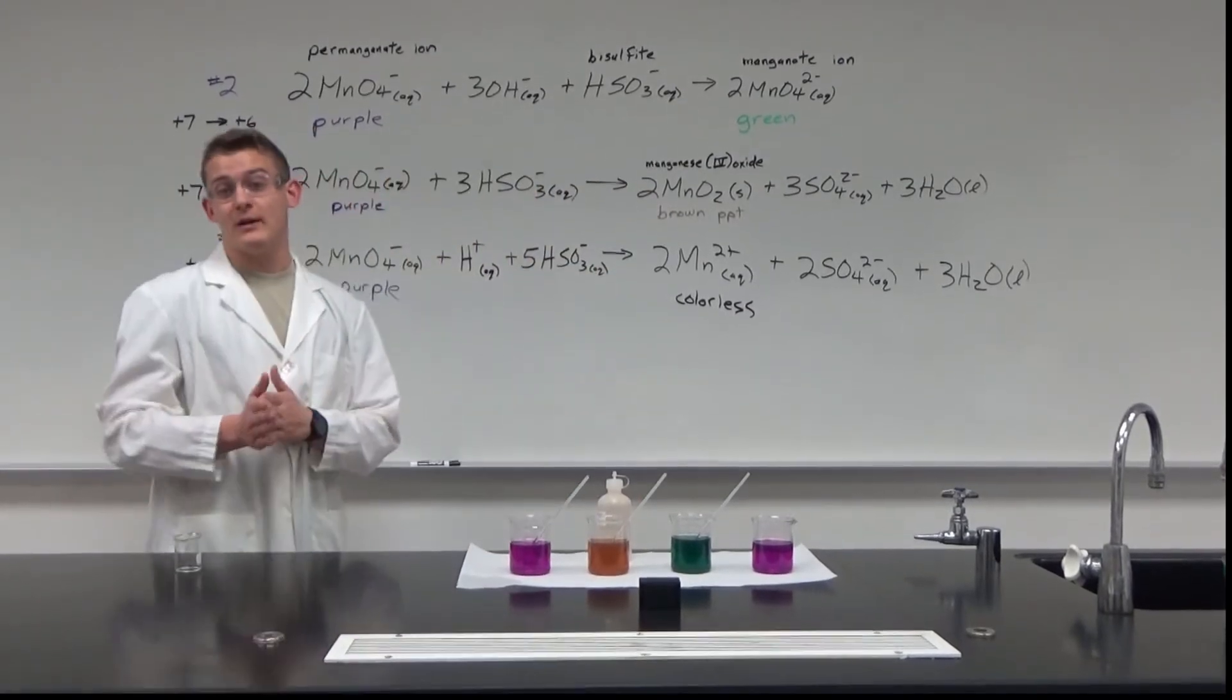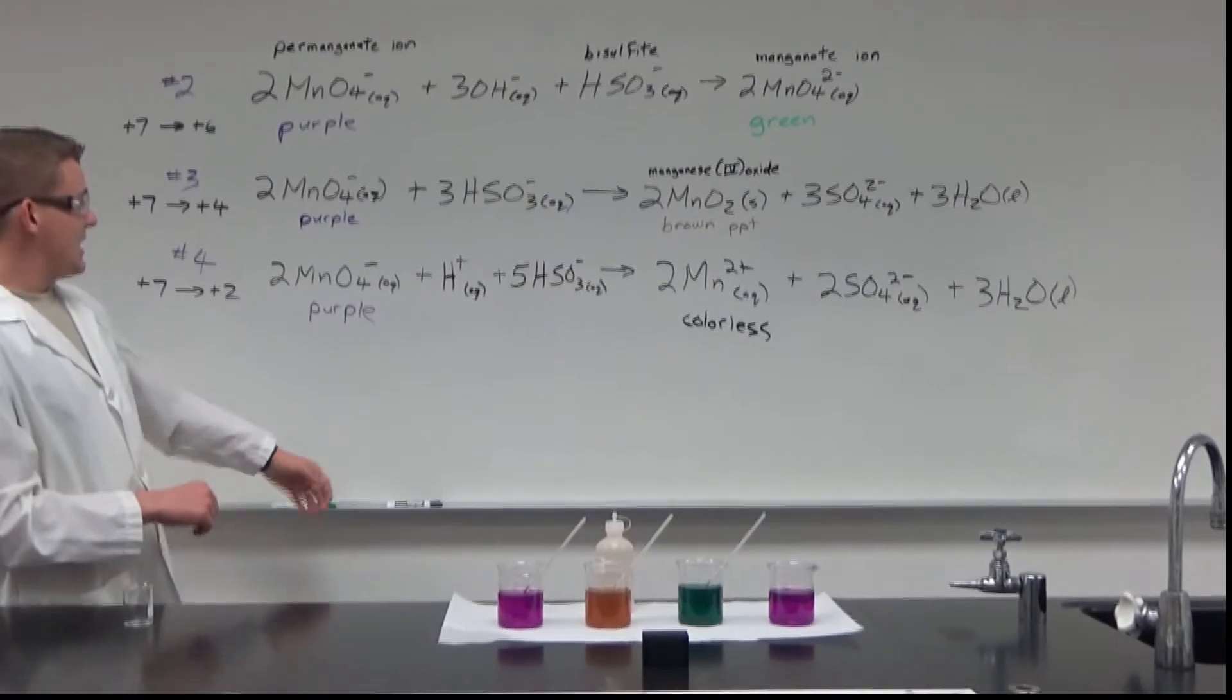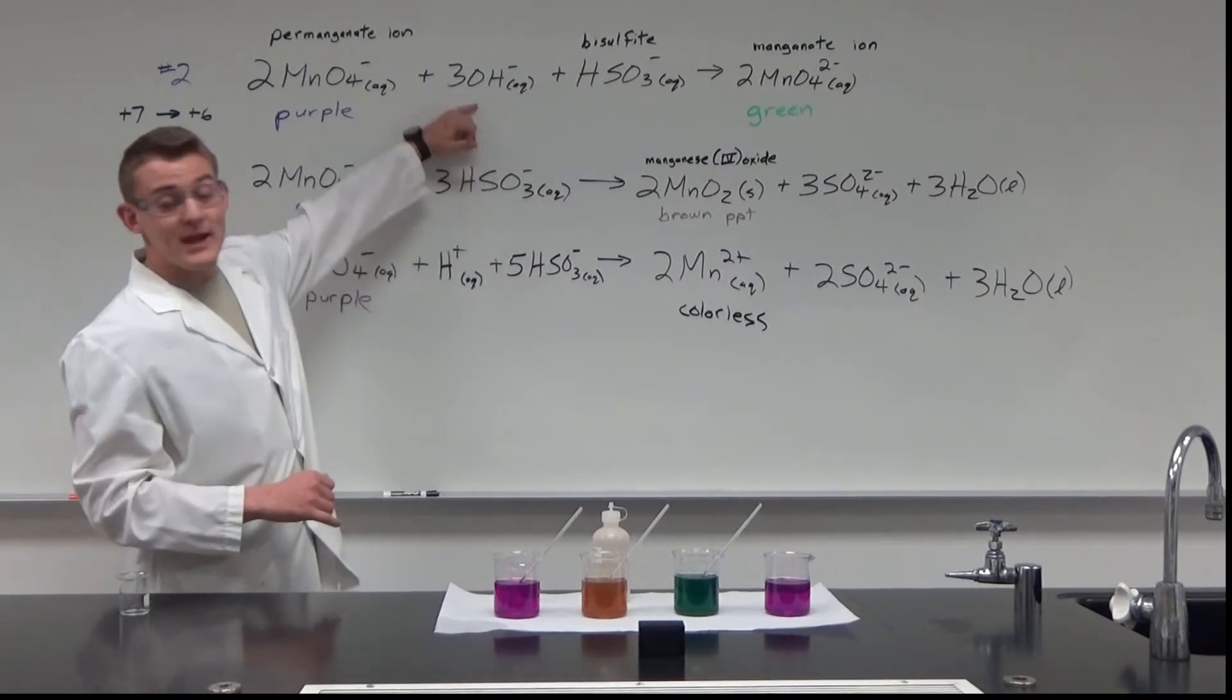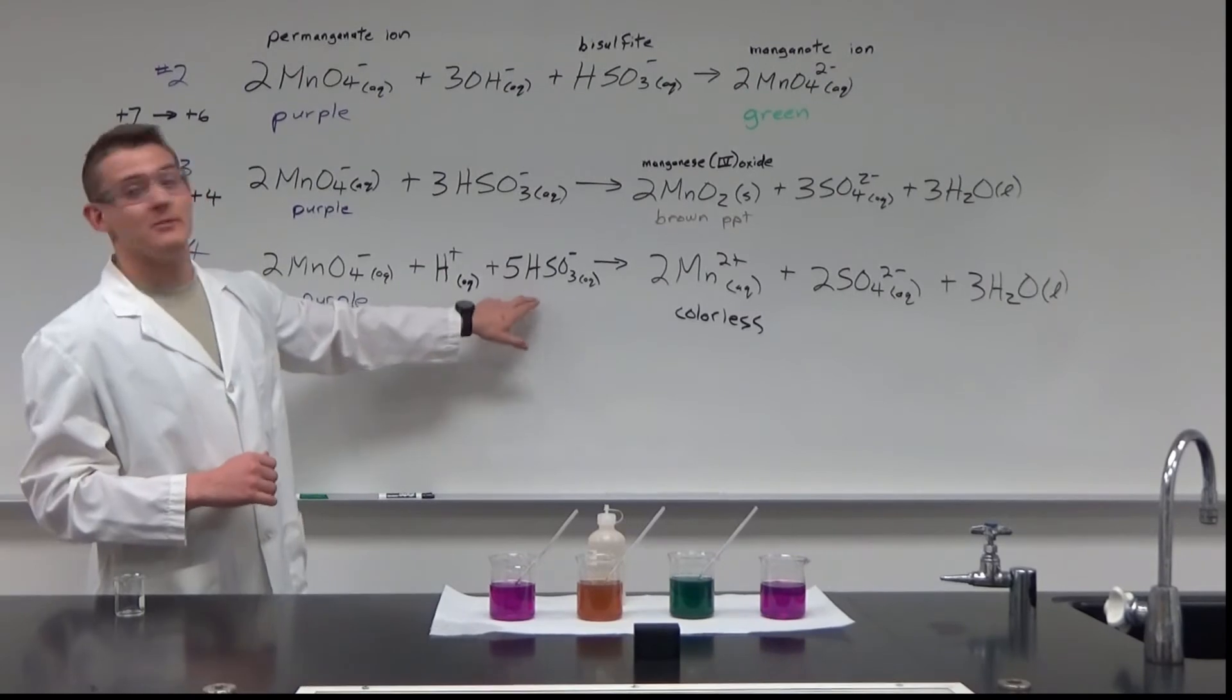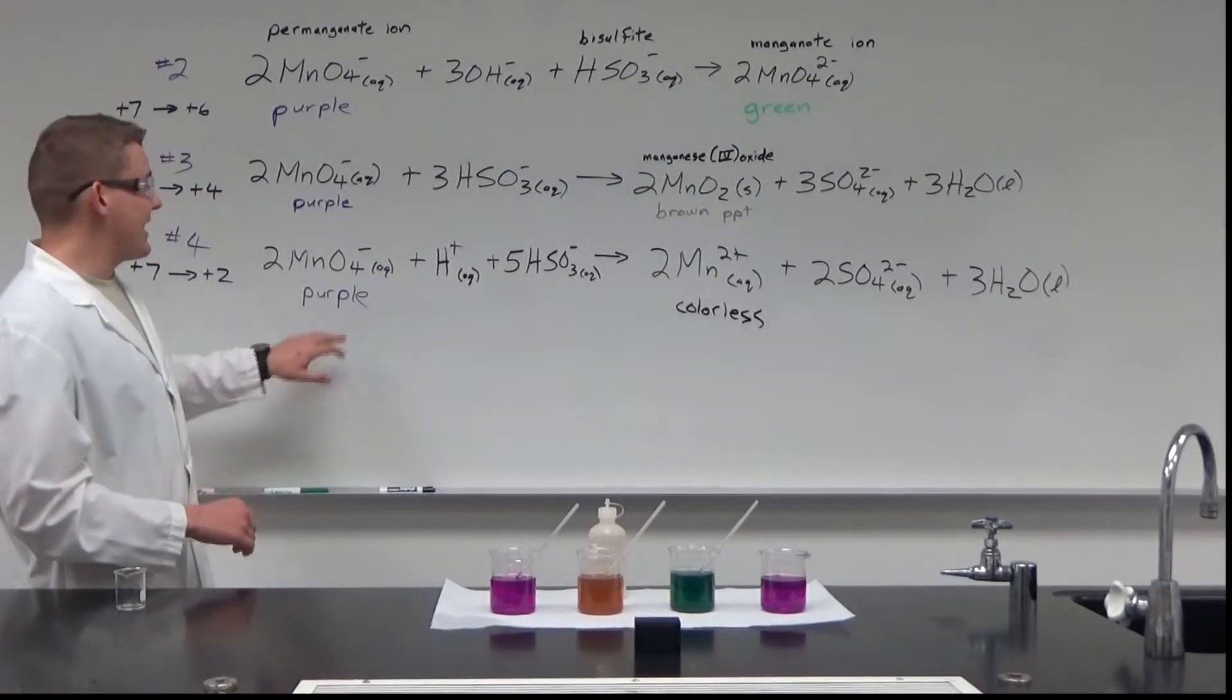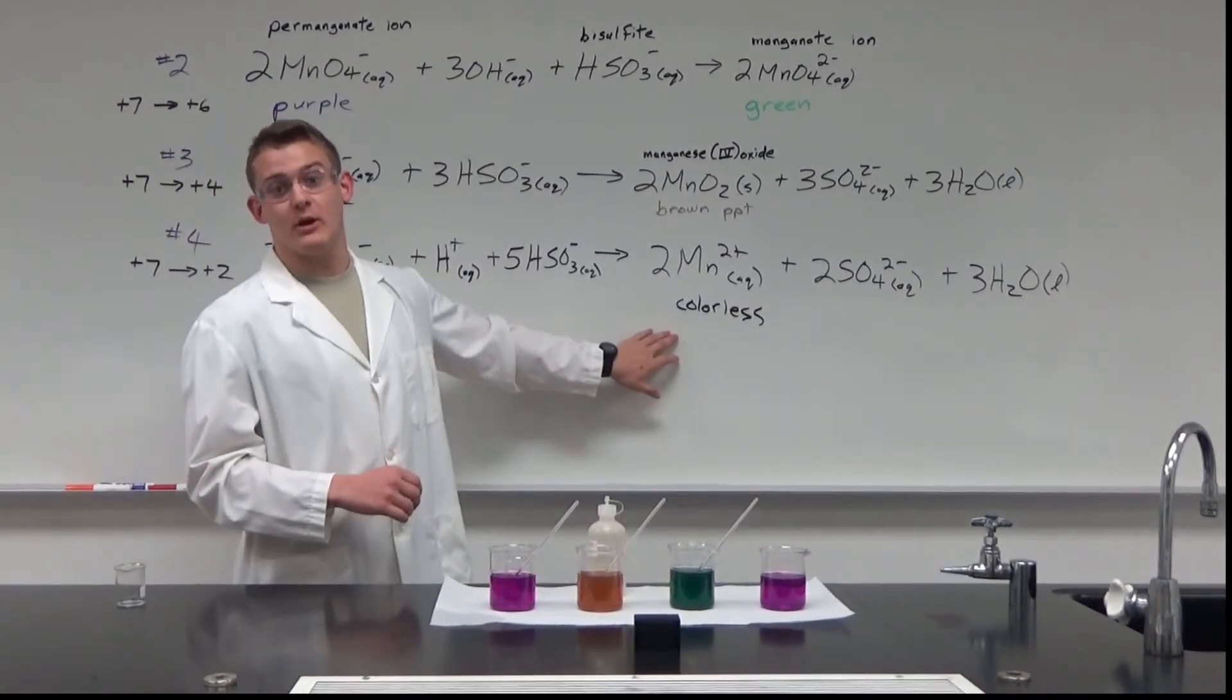And then for the final reaction, what we're going to be doing is instead of adding base like we did for the first reaction, we're going to go ahead and add acid along with the bisulfite. So that should give us from the purple to a colorless solution.